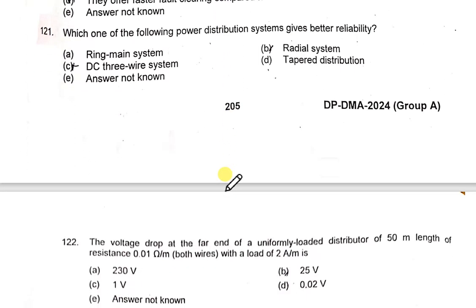Which power distribution system gives better reliability? The ring main system provides better reliability.